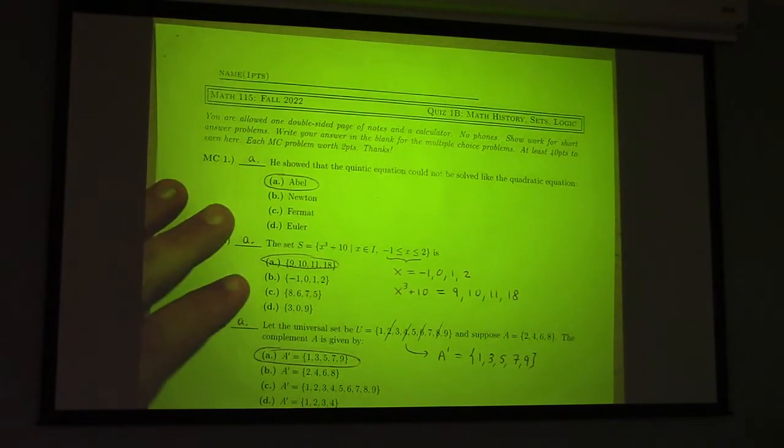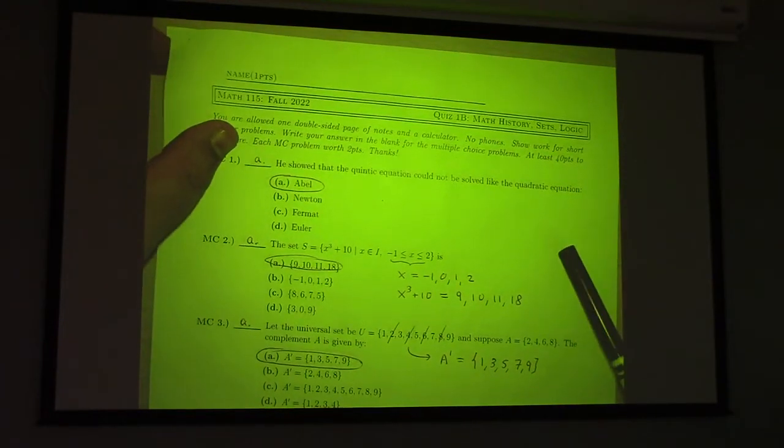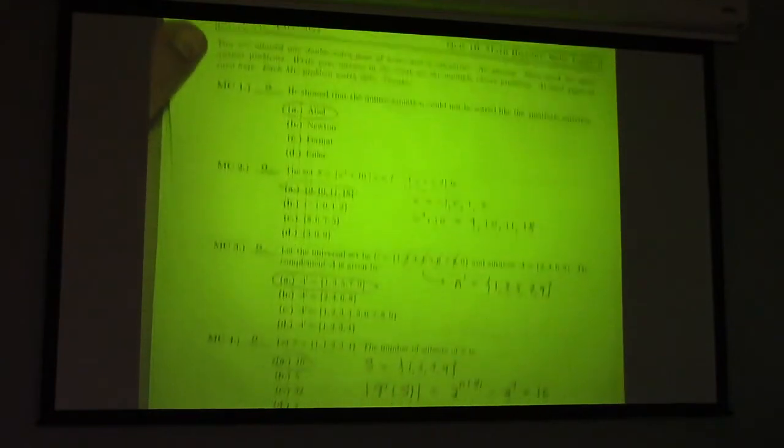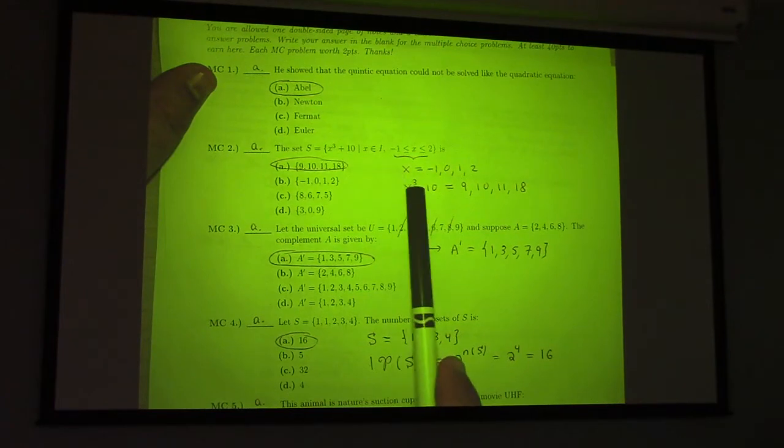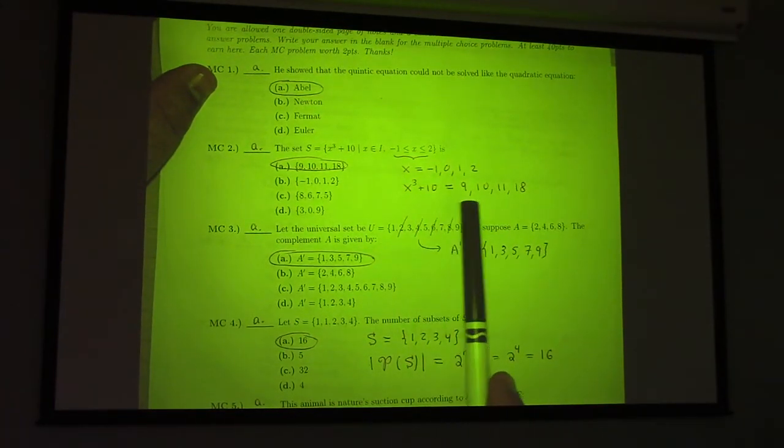All right, let me walk through this with you guys. It was Abel. Abel's the dude. This means X is either minus 1, 0, 1, or 2. If you feed that into the formula, you get yourself a 9, a 10, an 11, and an 18.